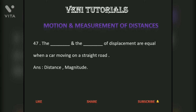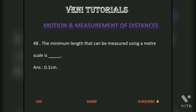The distance and magnitude of displacement are equal when a car is moving on a straight road. The minimum length that can be measured using a meter scale is 0.1 centimeters.